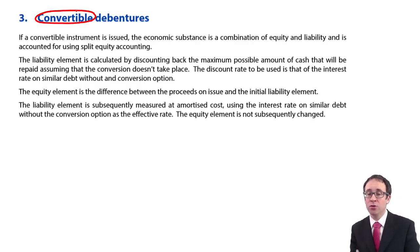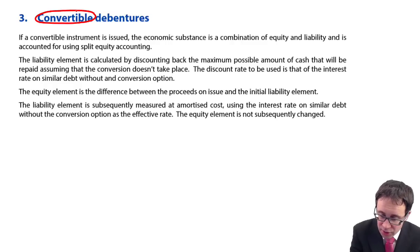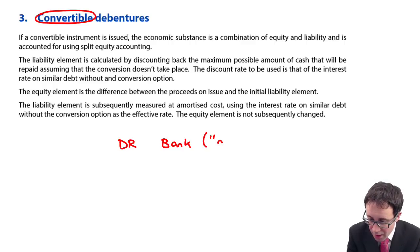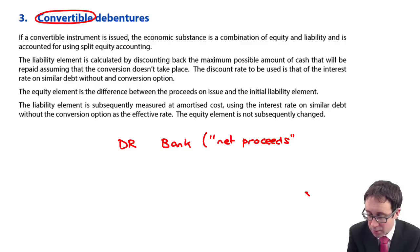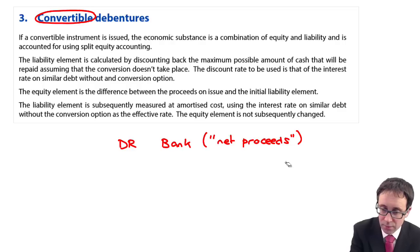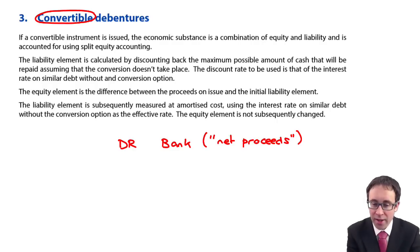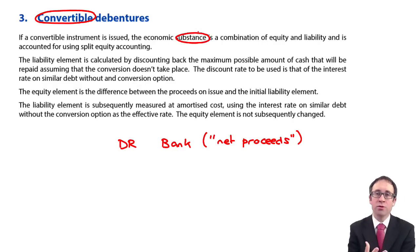We're interested in how to account for this, because from a financial instruments perspective we're going to be debiting bank with the net proceeds. Once we've debited bank, this is where the issue comes around, because we need to look at the substance. Legally it's debt — in the eyes of the law this convertible debt is a debt instrument until it's either paid back or shares are issued.